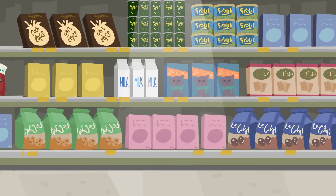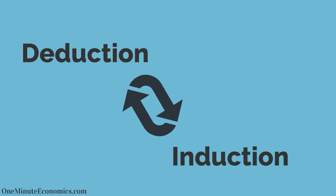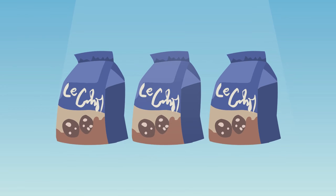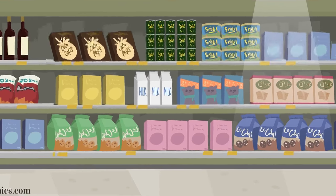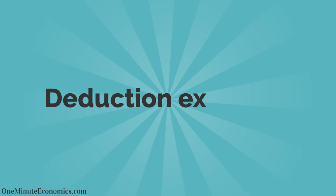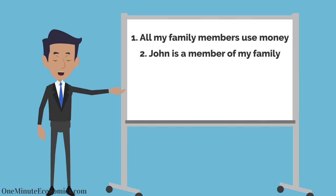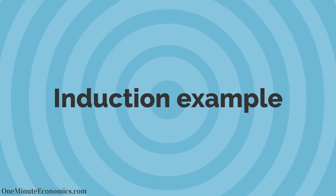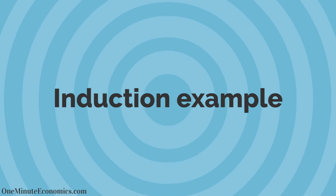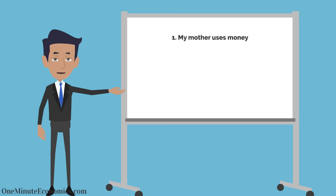With deduction, you start from something general and draw a specific conclusion, whereas the reverse is valid for induction, where you start with specific premises and draw a general conclusion. Here's a simple example for deduction: one, I start with something general and say that all my family members use money, and two, I say something more specific — that John is a member of my family. From these two premises I draw a specific conclusion that John uses money.